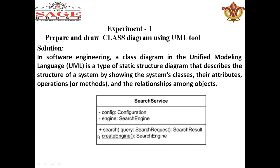Any class in a class diagram is represented by a rectangle box having three parts. In the first part, we write the name of the class. In the second part, we write the attributes of the class. In the third part, we write the operations of the class.